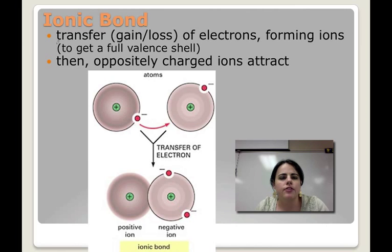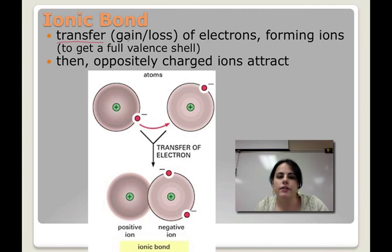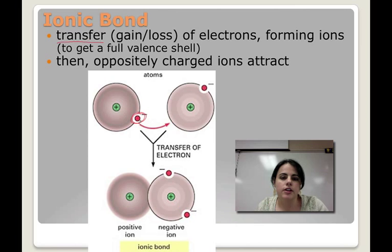Ionic bonds — the key word here is transfer of electrons. That means we're gaining or losing them; they're going from one place to another. Ions is an atom that has gained or lost electrons. So in essence, an ionic bond forms when ions form. They're trying to get that full valence shell, which is why they're gaining or losing electrons in the first place. In this example, we have two atoms. This one on the left is transferring an electron to this atom over here.